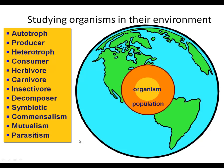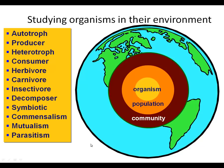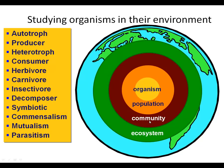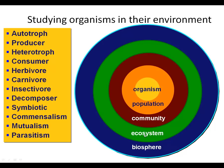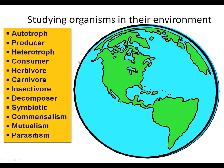Then we'll talk about populations, where we get an organism of the same type interacting with each other — probably the biggest way that these guys actually work together in terms of their own existence. Communities, where we get different populations of different organisms and they work together. Throwing in abiotic and biotic systems for an ecosystem. And then we have the biosphere, the living sphere of the Earth, all encompassed in an Earth view.